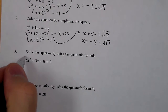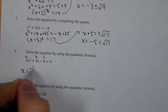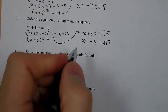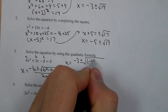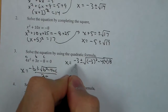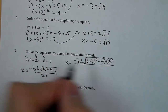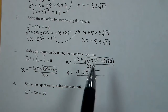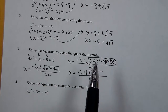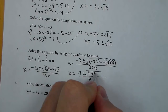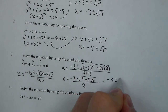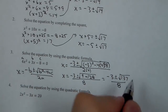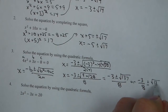Number 3 asks us to use the quadratic formula. Our values are a, b, and c. The quadratic formula is negative b plus or minus the square root of b squared minus 4ac, over 2a. So we're going to have negative 3 plus or minus the square root of negative 3 squared minus 4 times 4 times negative 8, over 2 times 4. That's negative 3 and 8 on the bottom. Inside it's 9 from negative 3 squared, and 4 times 4 times 8 is 128. Negative times negative makes it positive, so this becomes negative 3 plus or minus the square root of 137 over 8. We can also write it as negative 3 eighths plus or minus the square root of 137 over 8.